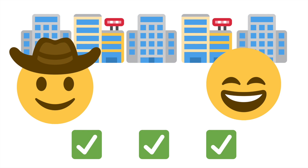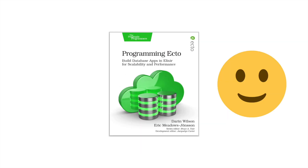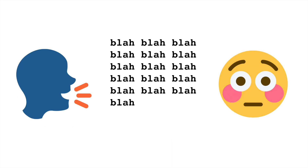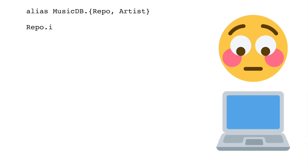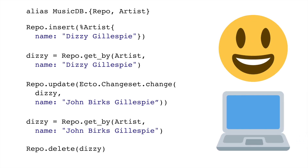And that's where we come in. Programming Ecto is your tour guide for the Ecto library. In part one, we get you oriented by walking you through each of Ecto's main modules one by one, and we show you what they're for, how they work, and how they all fit together. And it won't just be the authors blabbing at you the whole time. We set you up with a sample project and give you code to try out every step of the way, so you learn by doing, not just by reading.